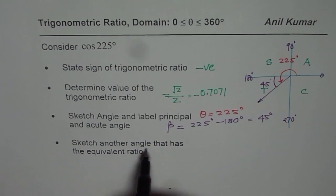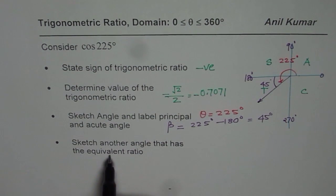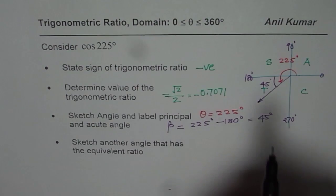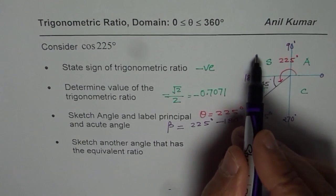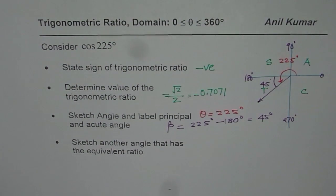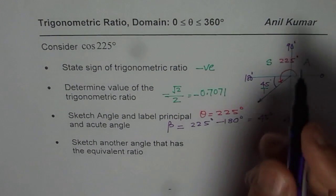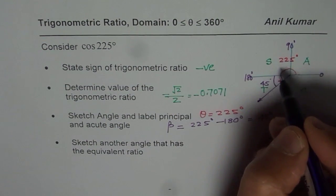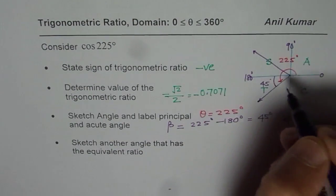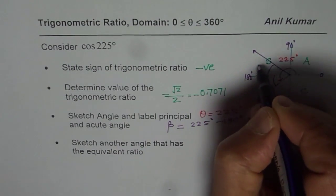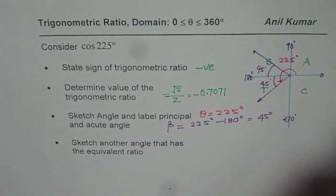Sketch another angle that has the equivalent ratio. Now, we are working with cosine, cos is negative in quadrant 3, cos is also negative in quadrant 2. And therefore, to sketch the equivalent angle, we should maintain the related acute angle and sketch a terminal arm in quadrant 2. Where this angle is also 45 degrees.